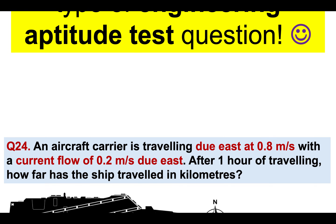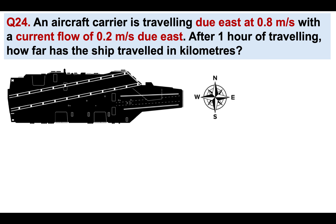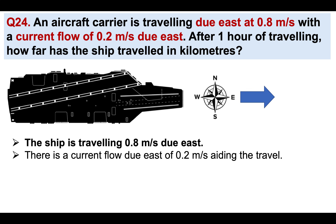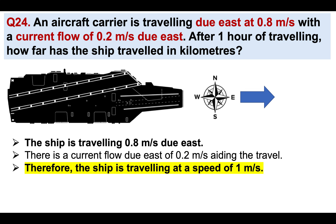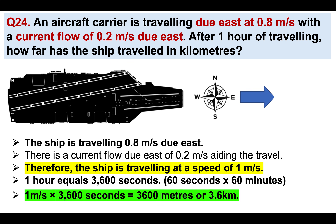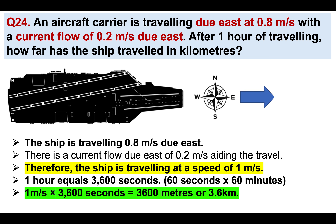Let's now try a different type of engineering aptitude test question — this is tough. Question 24: an aircraft carrier is traveling due east at 0.8 meters per second with a current flow of 0.2 meters per second due east. After one hour of traveling, how far has the ship traveled in kilometers? The ship travels at 0.8 + 0.2 = 1 meter per second. One hour equals 3,600 seconds (60 seconds × 60 minutes). So 1 meter per second × 3,600 seconds = 3,600 meters, or 3.6 kilometers.